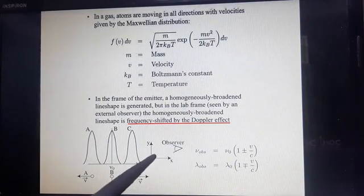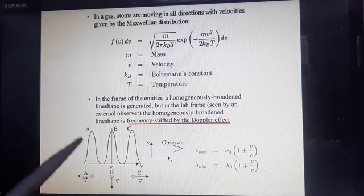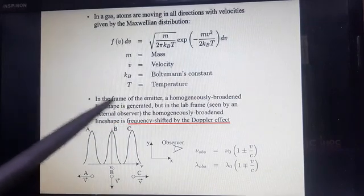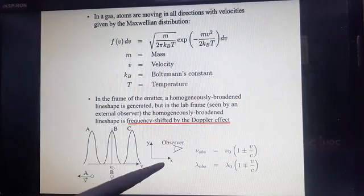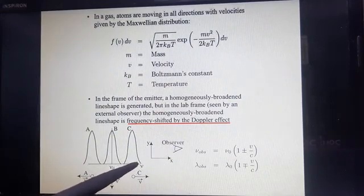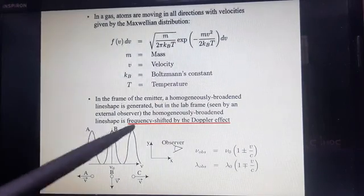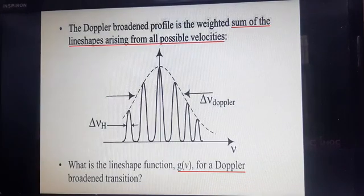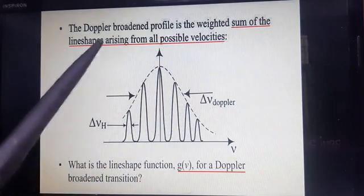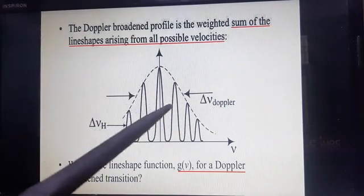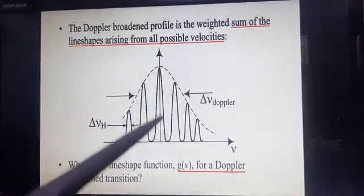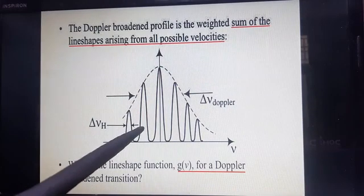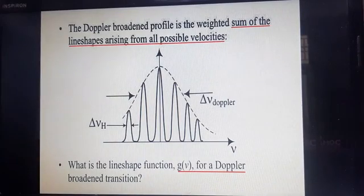We observe these spectral lines in the lab frame of reference. When observed in the moving frame, a shift in frequency is observed, but when observed in the simple frame, only homogeneous broadening line shapes are seen. The composite Doppler broadening profile consists of a number of spectral lines in which the amplitude or intensity changes in accordance with the Doppler shift.